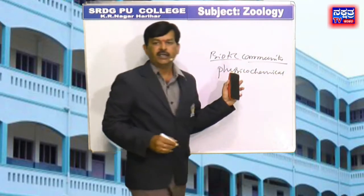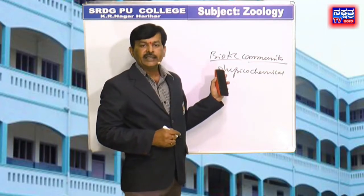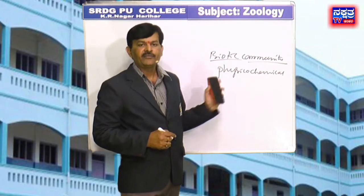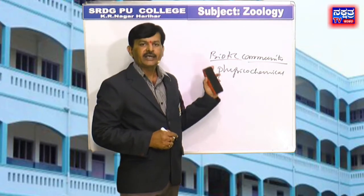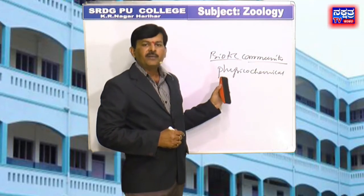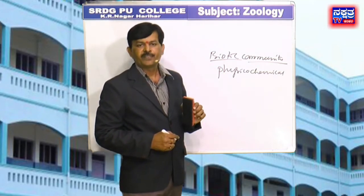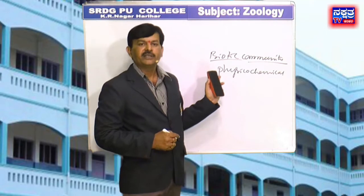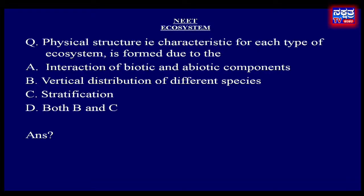This physico-chemical environment interacts to form a stable, self-supporting system. Examples include a pond, lake, desert, grasslands, forest, etc. — these are common examples of ecosystems. Therefore, the physical structure characteristic of each type of ecosystem is formed due to the interaction of biotic and abiotic components. That is Option A — interaction of biotic and abiotic components — is the right answer.